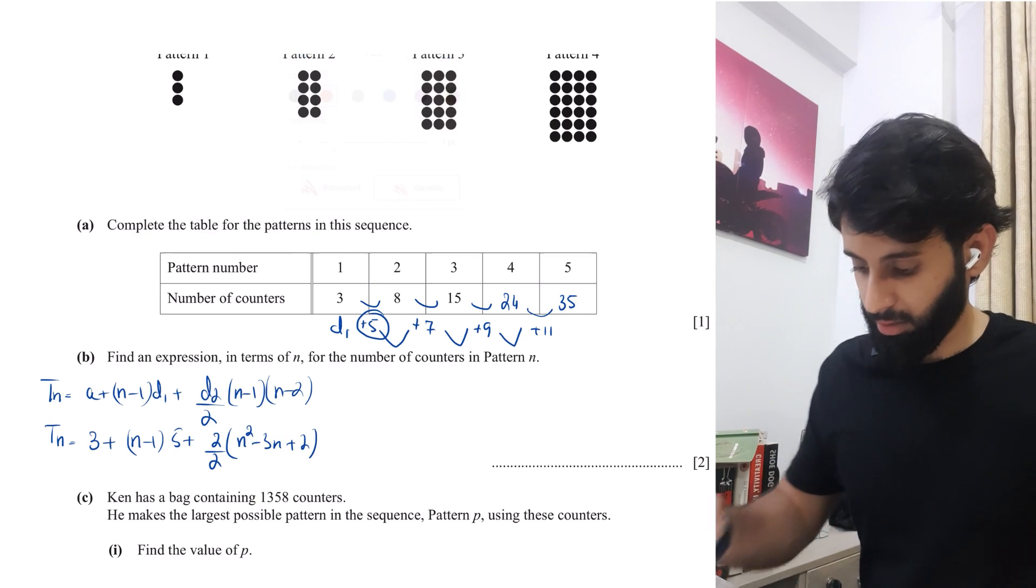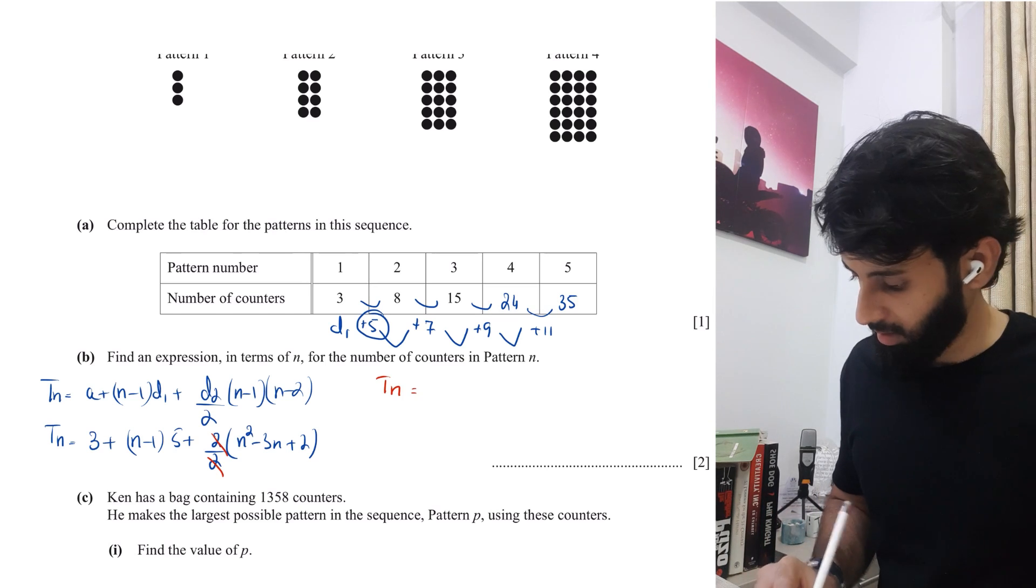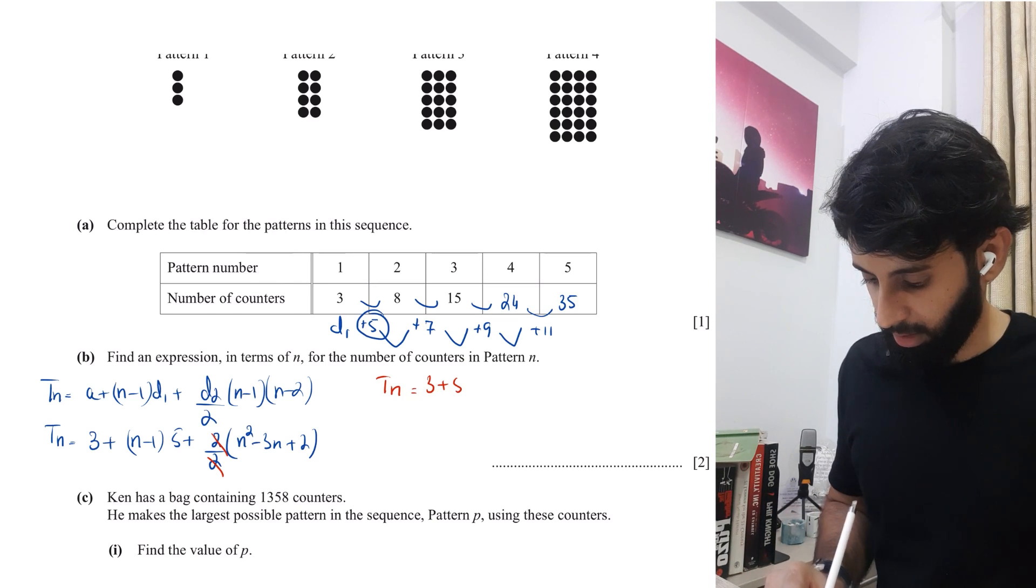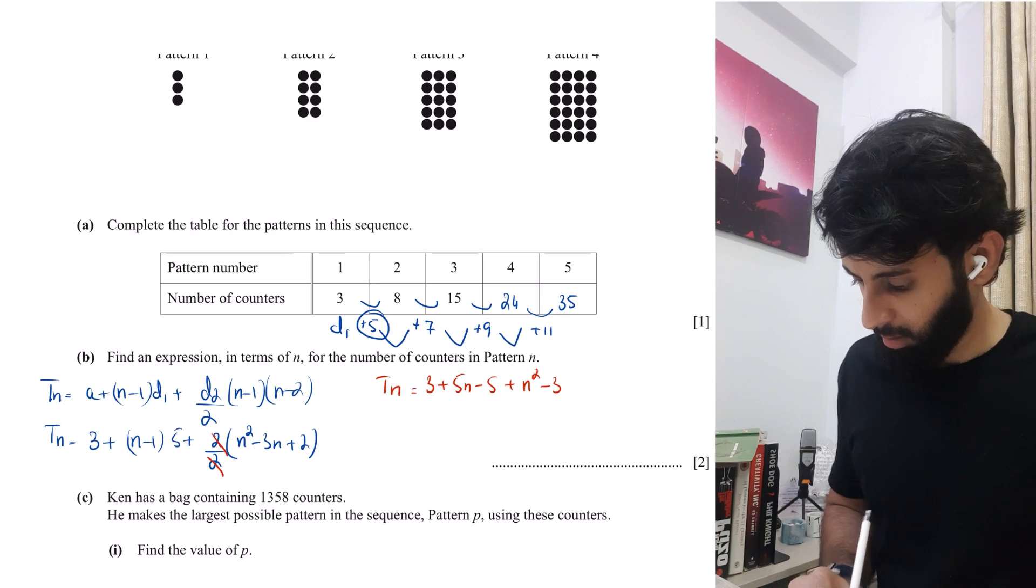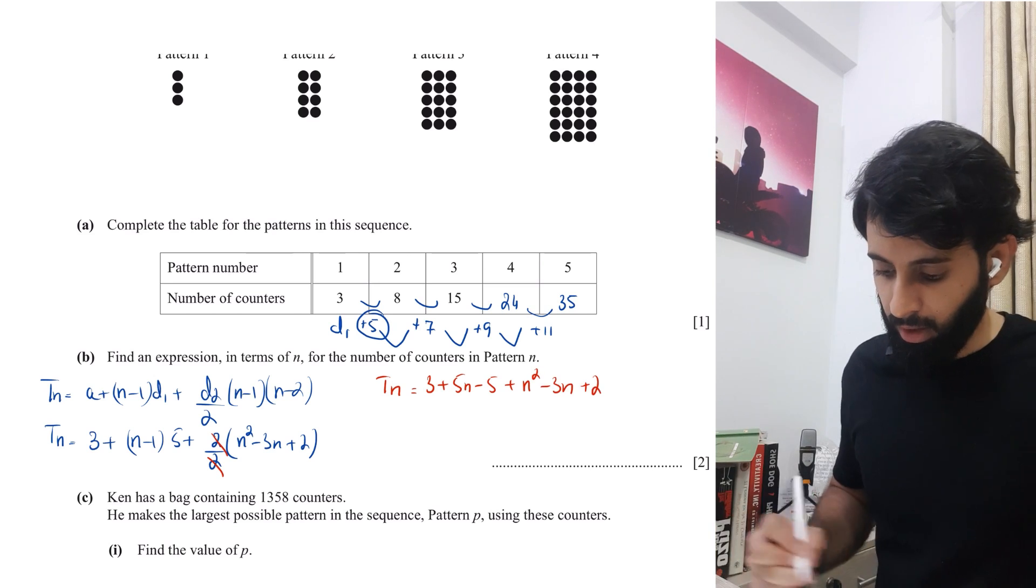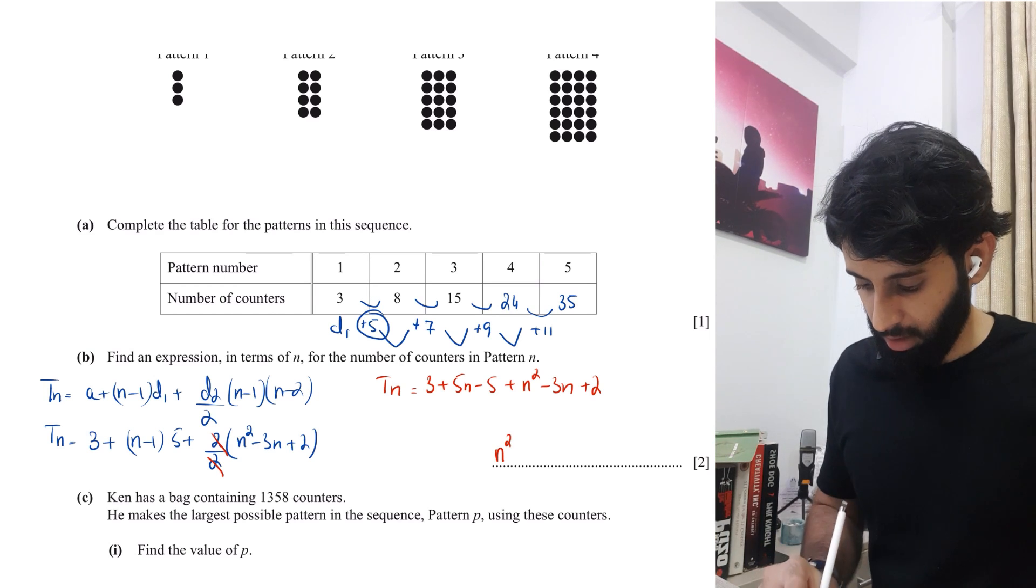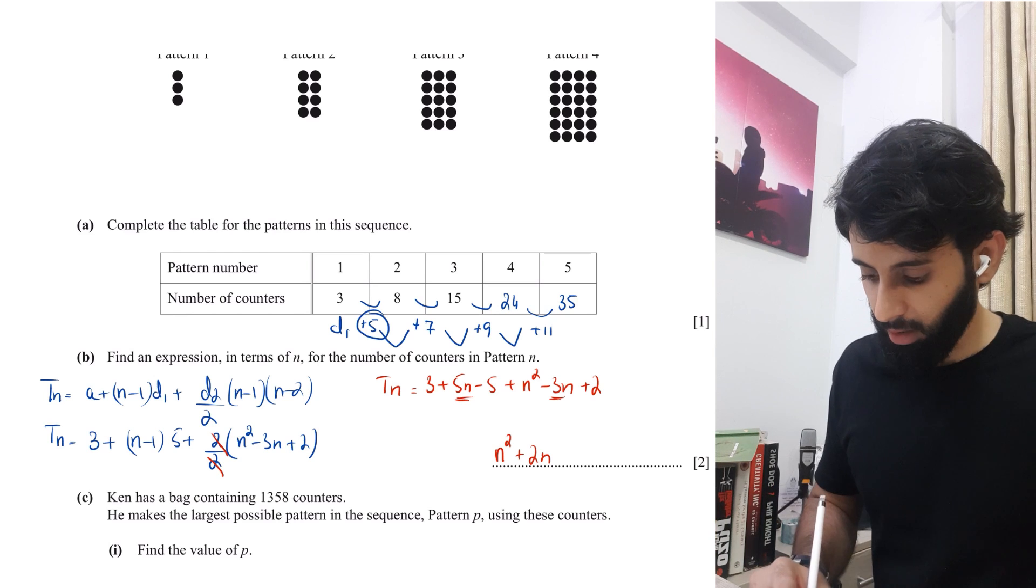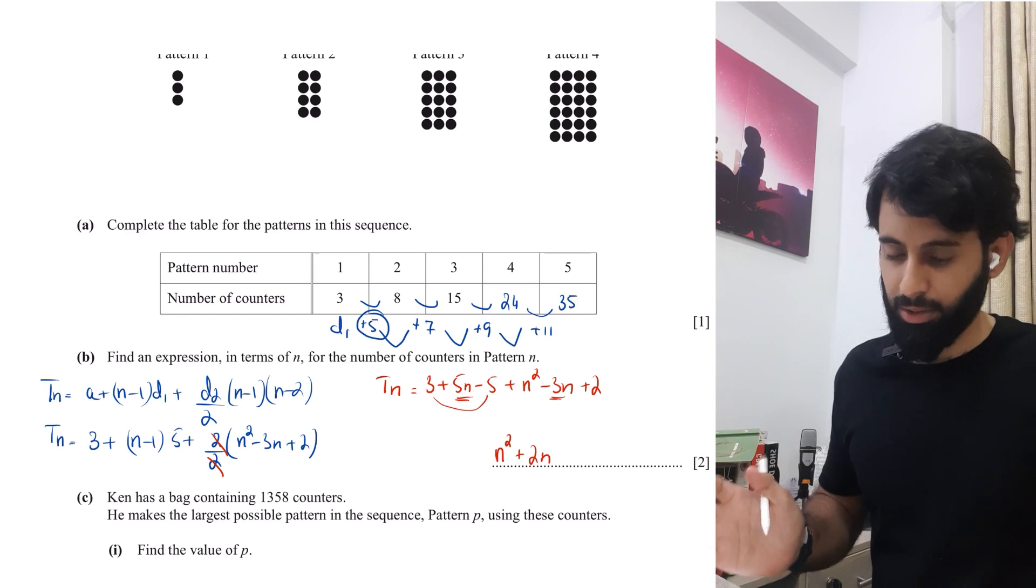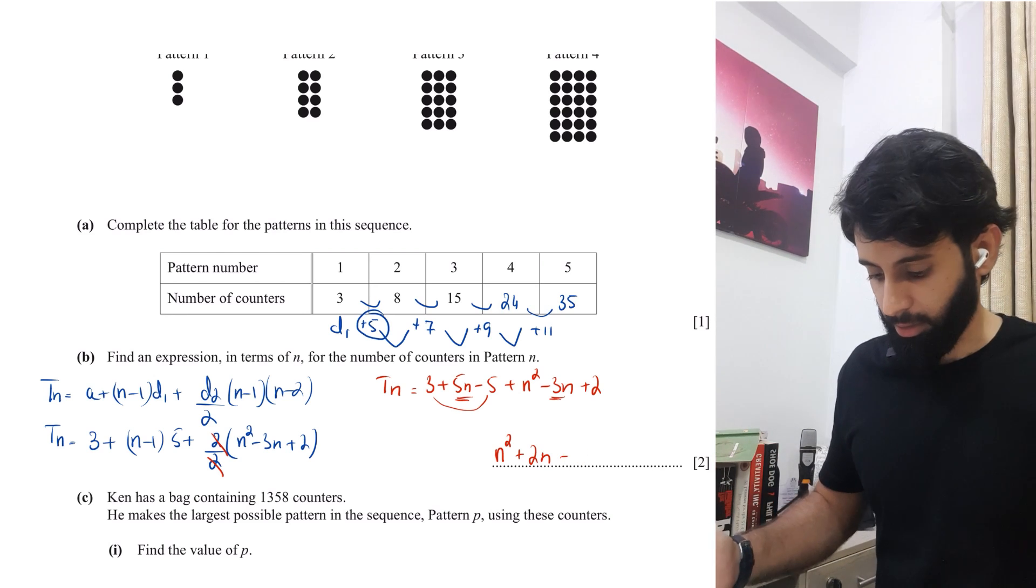Now it's just a matter of simplifying. So I'll switch to another color. So two and two get canceled out and you have TN is equals to three plus 5N minus five plus N square minus 3N plus two. Now let's simplify and write down the final answer. So we just have N square. So N square as it is 5N minus 3N is going to give us plus 2N. And then you have three minus five, which is going to be minus two. And then minus two plus two is going to be zero. So either you can write plus zero or you can write nothing at all.